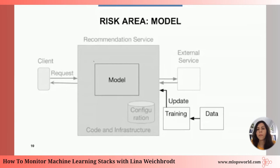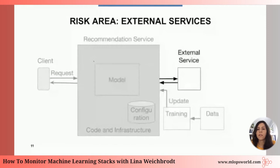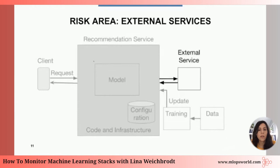The next risk area is external services. For example, we had an enrichment service for meta information — something you feed into your model or business rules, like prices or a personalized size recommendation from another ML model. If any of these external services degrade in performance, it causes issues. We also had a case where we switched from one enrichment service to another, and in the new service one of the fields we used to filter on was less populated — so we filtered out more return values, and the user actually saw fewer recommendations.